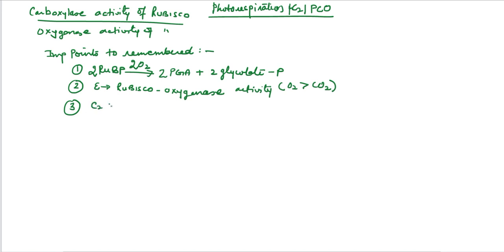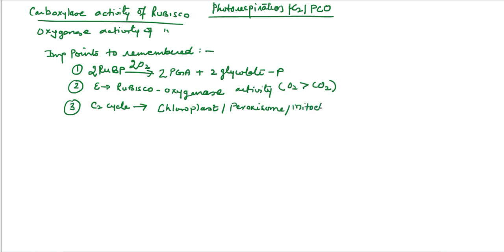Third point: the C2 cycle or photorespiration takes place in three cellular compartments — one is the chloroplast, next is the peroxisome, and the third is the mitochondria.